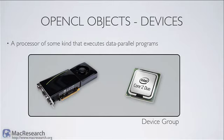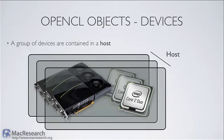A device group could consist only of CPUs, only of GPUs, or a mix. Many computers ship with multiple graphics cards, and those could all form a device group. Device groups are contained within a host — in our case, the desktop system — and a host can have multiple device groups. For example, CPUs could be one device group and GPUs a second. It's a straightforward but important concept, especially as we get into the specification.